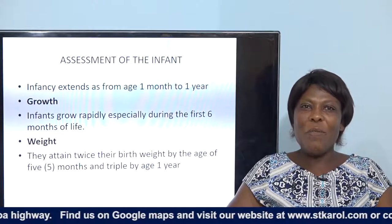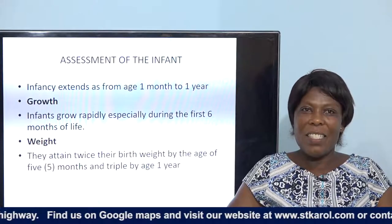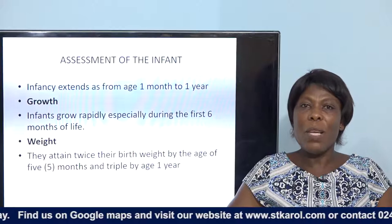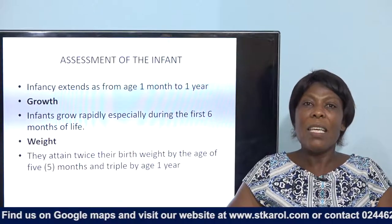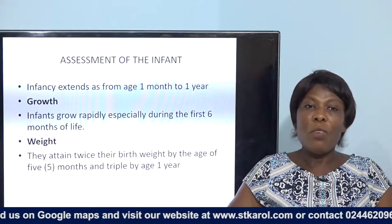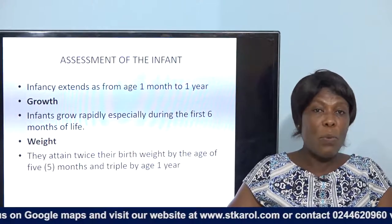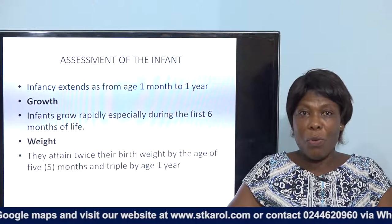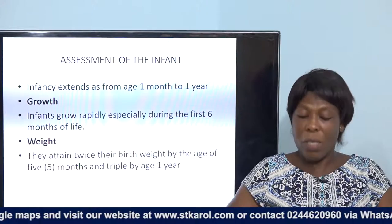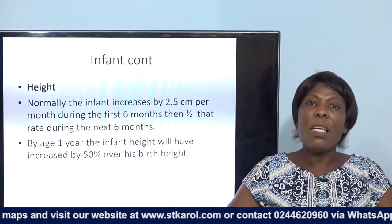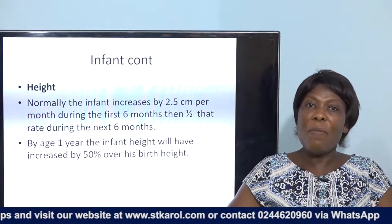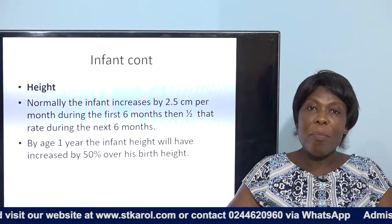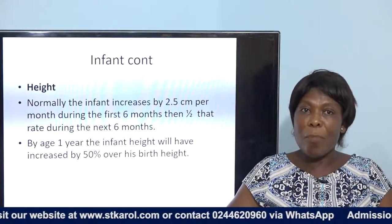Infants extend from one month to one year. Growth is rapid, especially during the first six months of life — they attain twice their birth weight by age five to six months. By age one year, the child's weight triples the birth weight. This is likely to be asked in multiple choice questions: at which age does the baby attain double the birth weight?